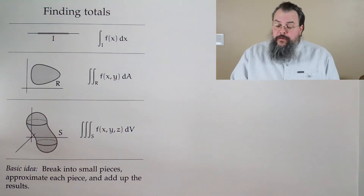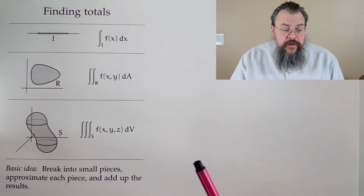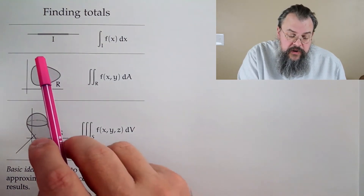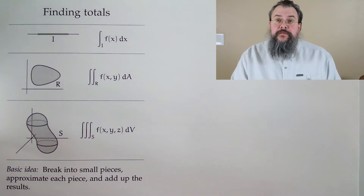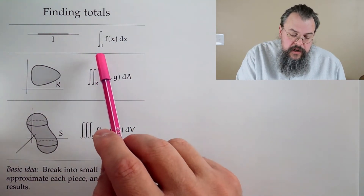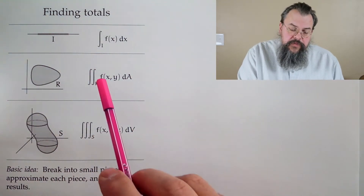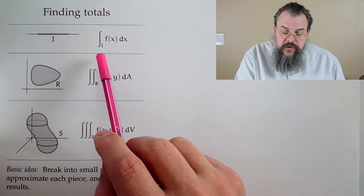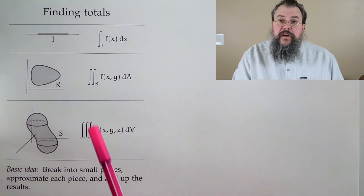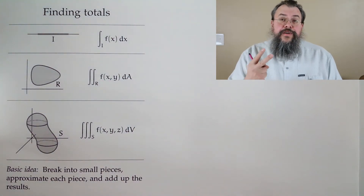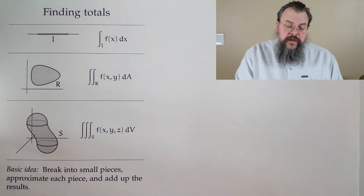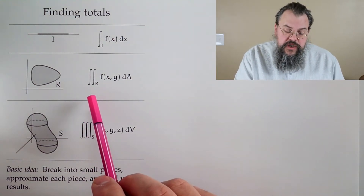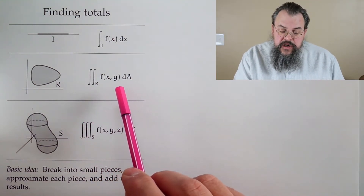So we know about integration, and really the philosophy for integration is let's find totals. There's one-dimensional integration, where we integrate over an interval — an integral from a to b of f(x) dx. In two dimensions, we've gotten pretty good at that: we integrate some function over some region, dA.